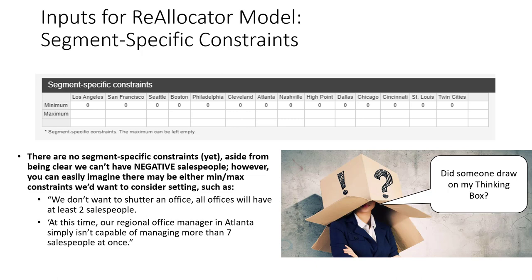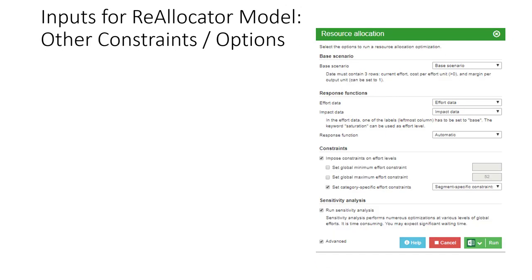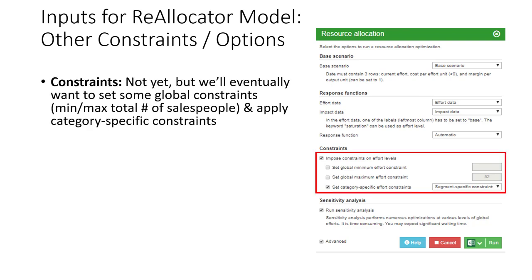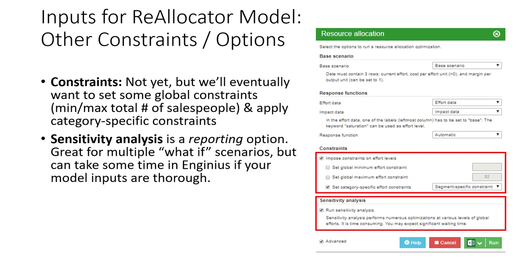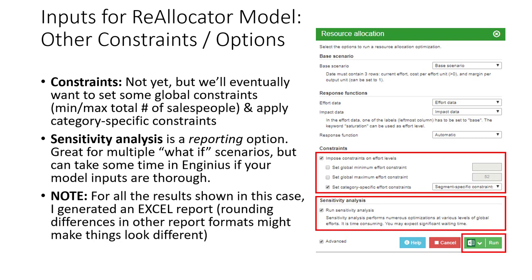There are a few other inputs to attend to in the reallocator model for InGenius. At this time, we aren't setting any segment-specific or global minimum or maximum constraints. For reporting, we're going to ask InGenius to conduct a sensitivity analysis, which will run a whole bunch of different what-if scenarios varying the total number of salespeople allocated across the 14 markets. All results shown in this video are from running InGenius while generating an Excel-based report.